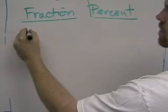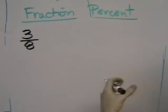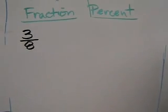Here's a method for turning a fraction, like 3 eighths, into a percent. This method will work every single time. It's not a shortcut. It's the way to do it.